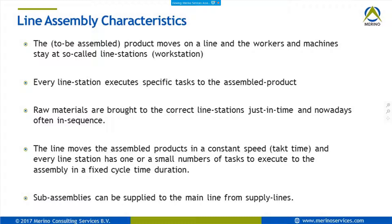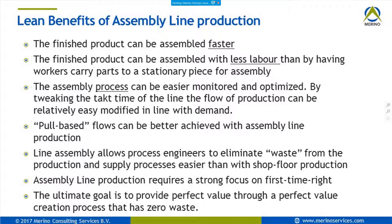The benefits of assembly line production are very much related to what we've learned from lean manufacturing: producing faster, less labor, very process-oriented, pull-based, eliminating waste, putting operations close to each other, and optimizing in the most lean way. There's a strong focus on first-time-right and creating the perfect value flow — the most optimal flow to assemble a finished good.